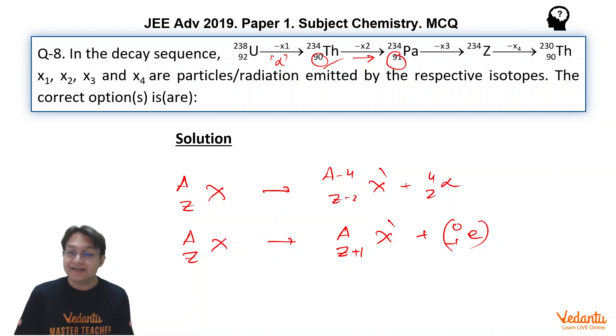Talking about this X3, once again we can see there is no change in mass, but 91 is changing into some number and we don't know about this number. Let's suppose that this number is equal to A, and then we can see that in another decay, 234 is changing into 230.